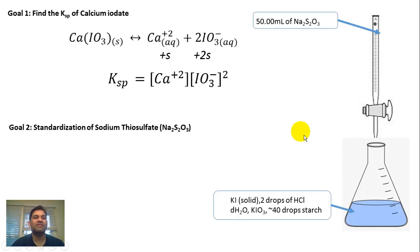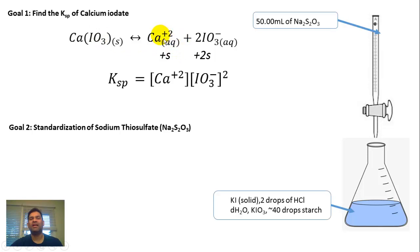The goal of this experiment is twofold. One is to figure out the Ksp, the solubility product constant of calcium iodate, which is a solid in equilibrium with calcium ion and iodate, IO3-. So to balance it, we put a 2 here.